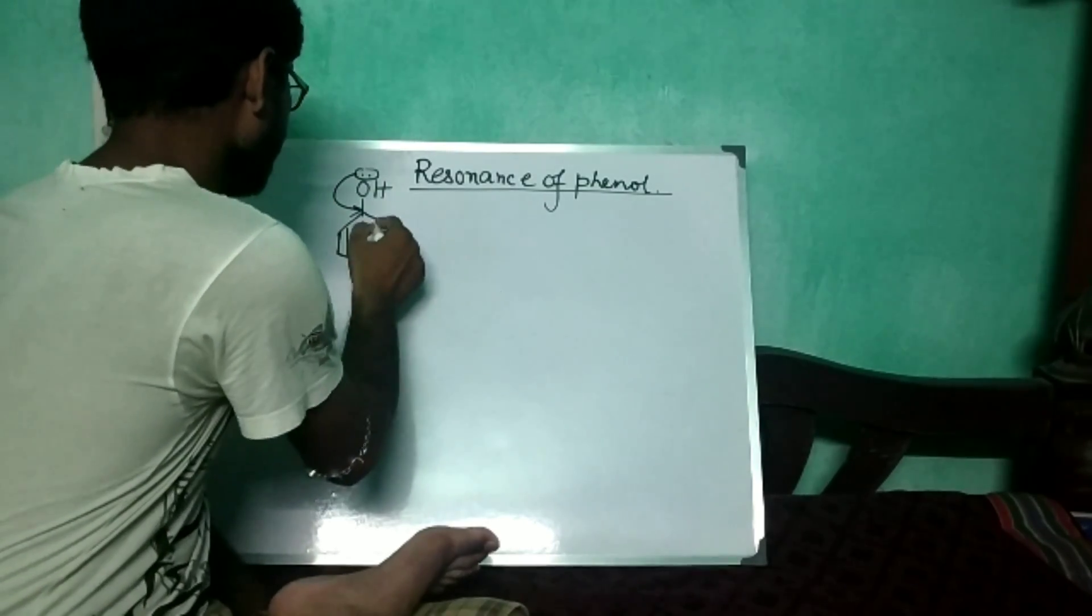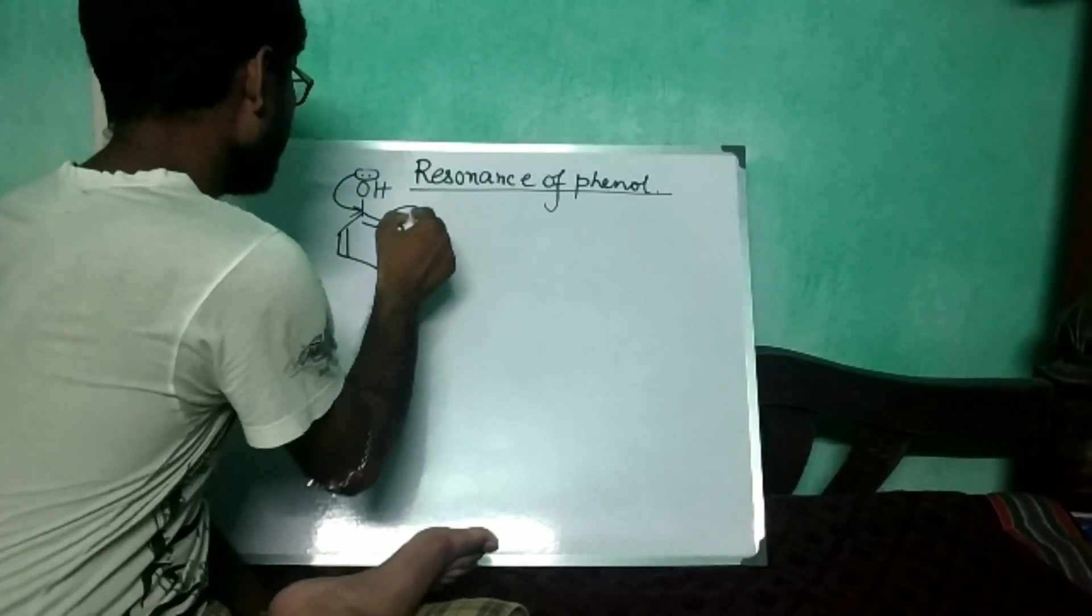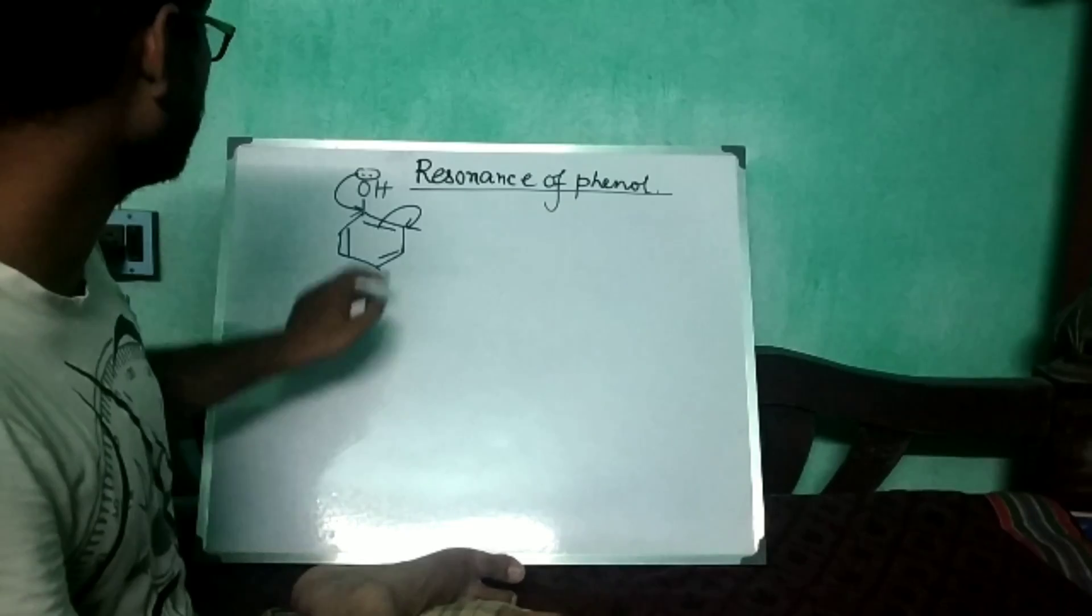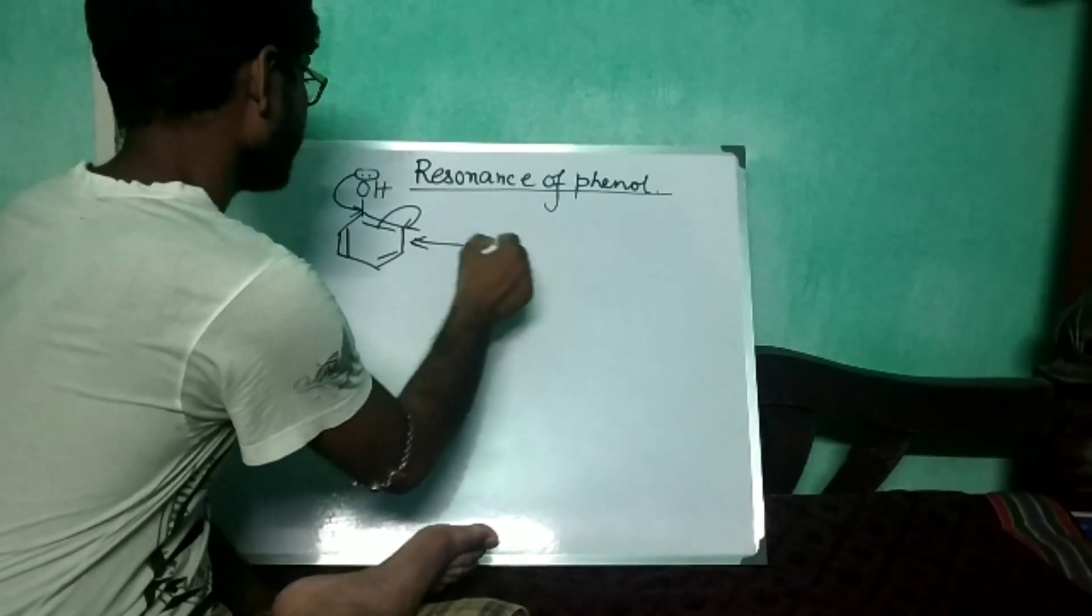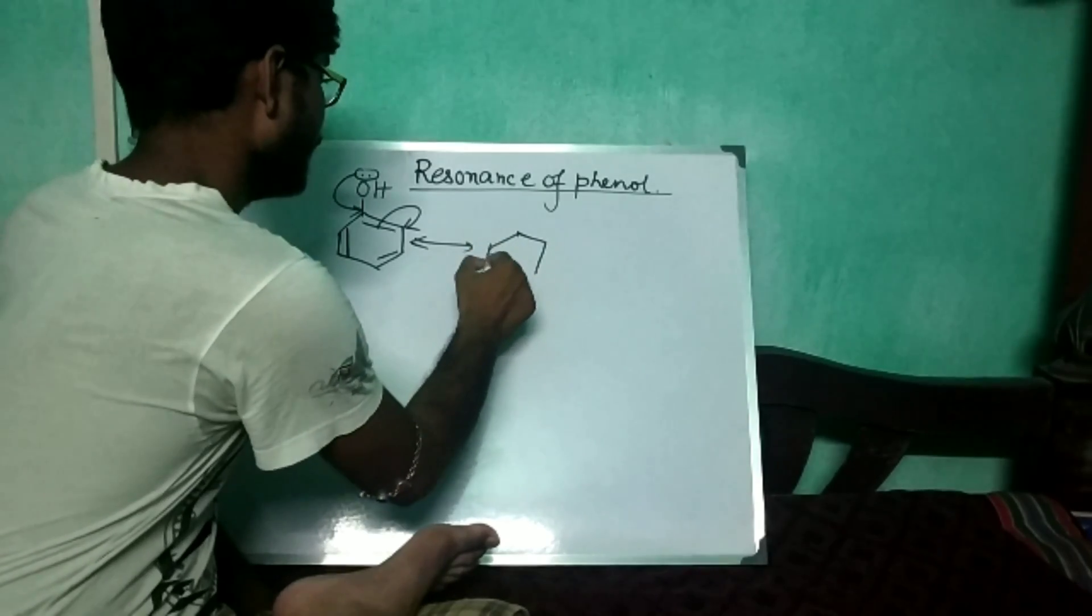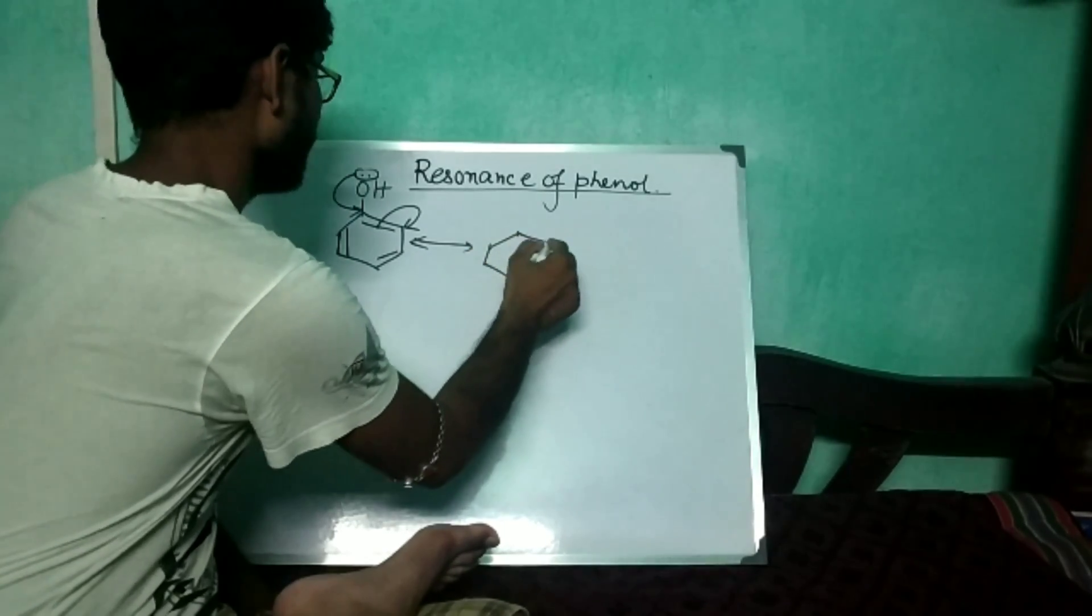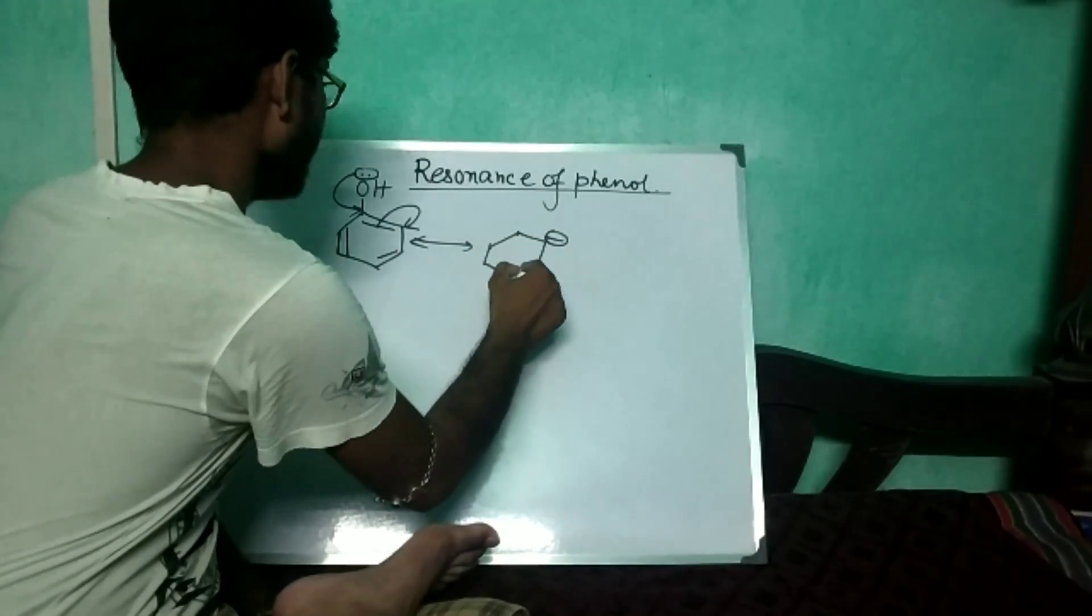...is going here and the bond migrates and now on this carbon atom. In the next step, it is produced like that with a positive charge.